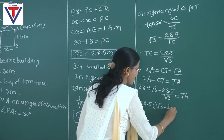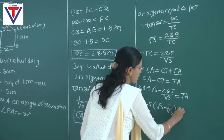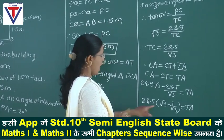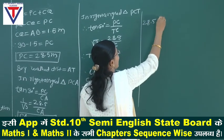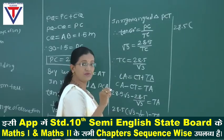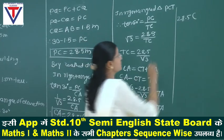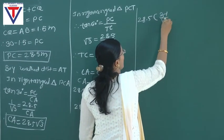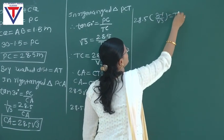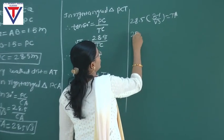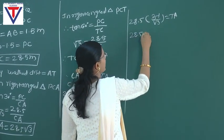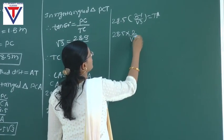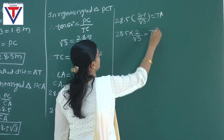Inside the bracket: root 3 minus 1 upon root 3. Multiplying through: 28.5 into (root 3 times root 3 minus 1) upon root 3, which equals 28.5 into (3 minus 1) upon root 3, giving 28.5 into 2 upon root 3 equals TA.